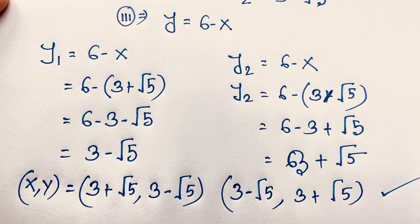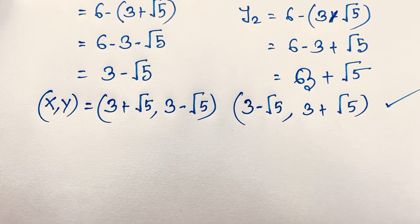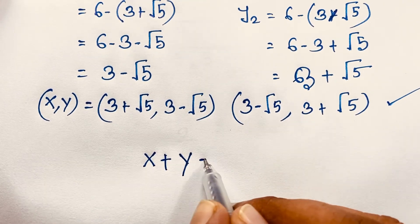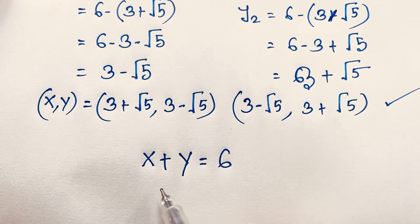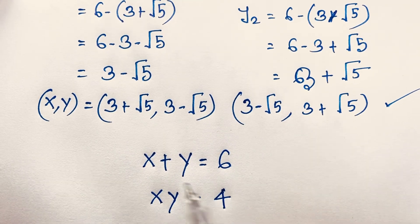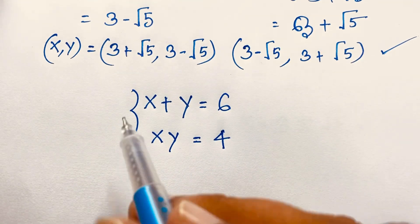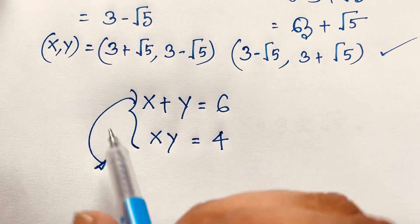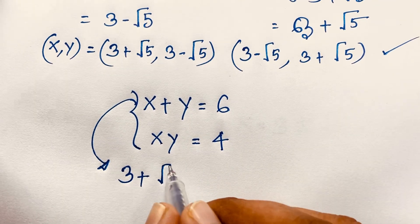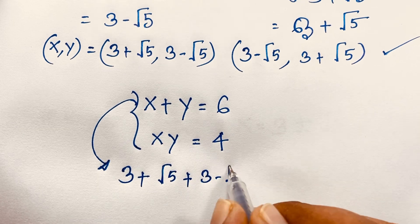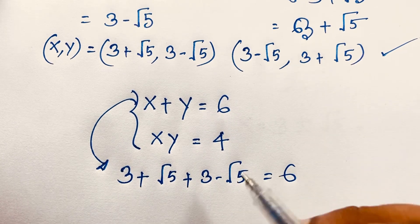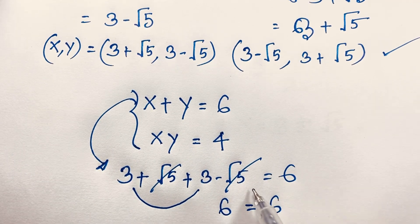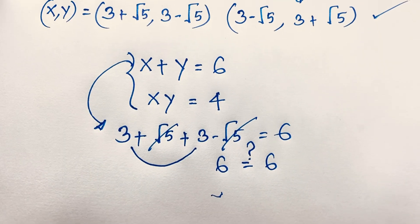Let's verify our answers. Our question was x plus y equals 6, and xy equals 4. Taking the first equation: (3 plus root 5) plus (3 minus root 5) equals 6. The root 5 terms cancel out, and 3 plus 3 equals 6, which equals 6. Left-hand side and right-hand side are both equal.